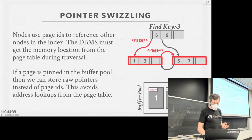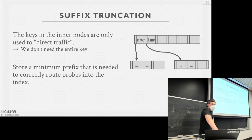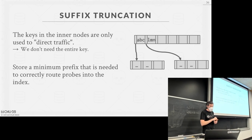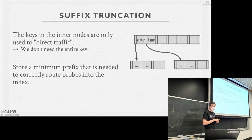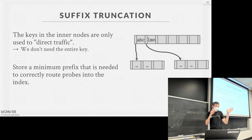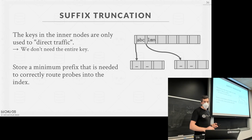A student asks about suffix truncation and whether string comparison is used in practice. String comparison is slow byte-by-byte, though you can vectorize it. If keys are dictionary-compressed you could use integer comparison instead, but most systems don't compress index keys because B+ trees are used for transactional/OLTP workloads where you want to be in and out of nodes as fast as possible — adding decompression overhead defeats the purpose.